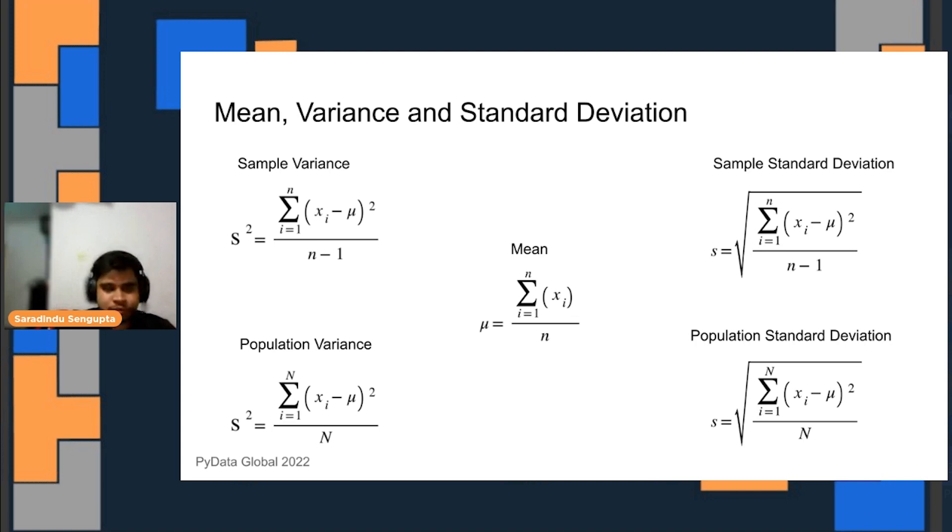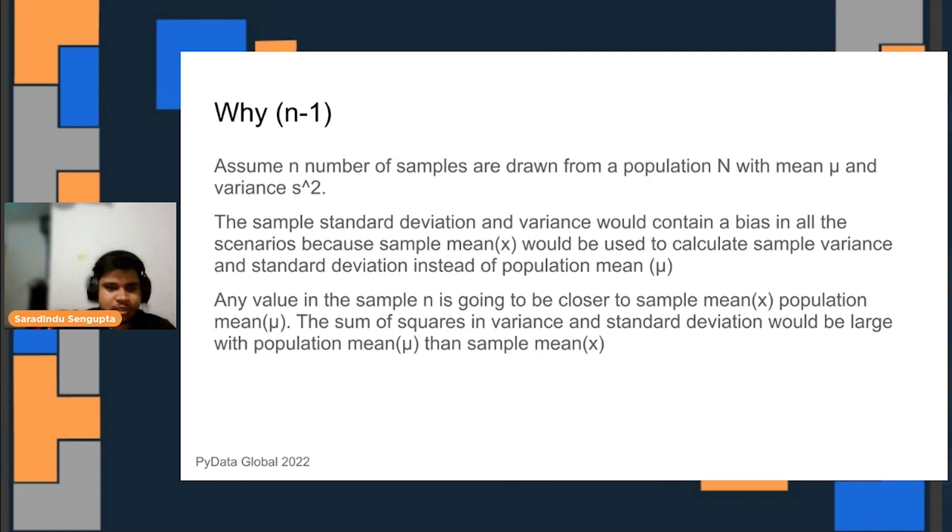Bessel correction works for standard deviation and variance. Why n-1 is, without long proofs, the understanding is that to calculate sample mean, sample standard deviation, and sample covariance...